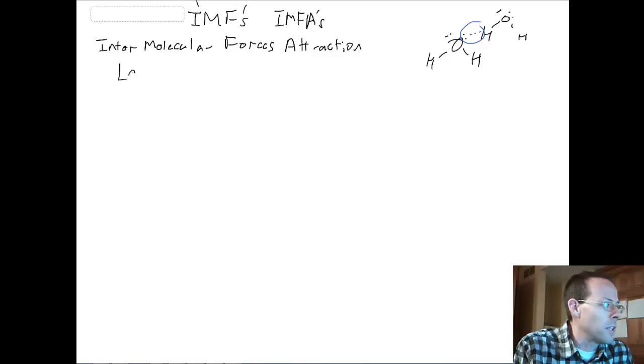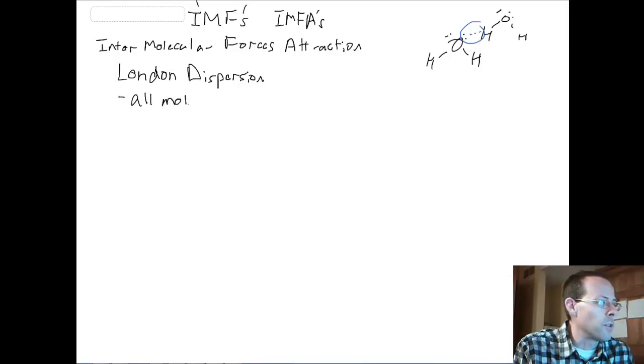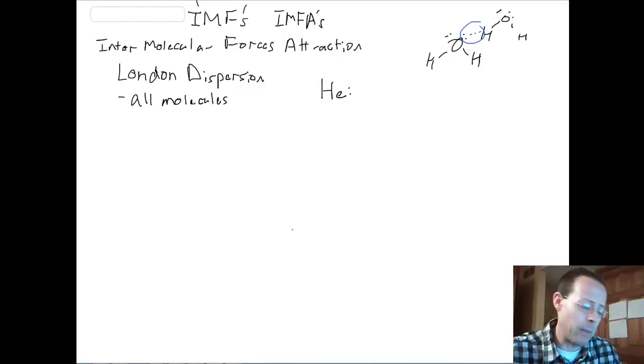So the first type is simply known as London dispersion forces. London was the guy's last name, so it has nothing to do with the city in Great Britain. A couple of things you need to know about London forces is all molecules have London dispersions, because London dispersions simply have to do with where electrons are in a specific element. So, if we talked about helium, helium has two electrons, but we never find helium by itself. If we're talking about the element helium, we might have a whole gas, a whole container filled with millions and millions, moles and moles and moles of helium atoms. So, helium doesn't exist on its own, we might have another helium right here. Because we can freeze helium and turn it into a liquid, and eventually get it into a solid.